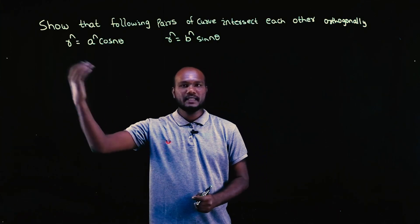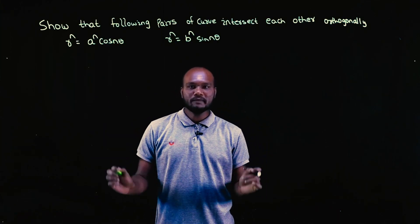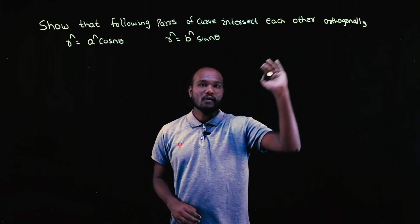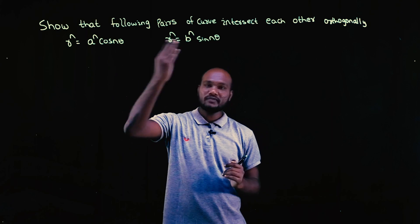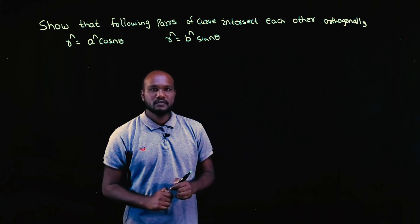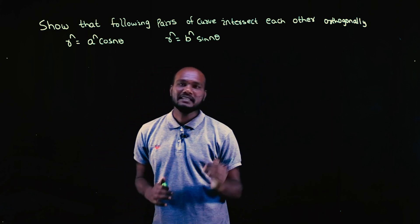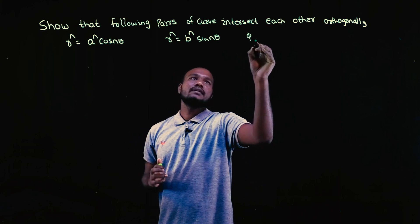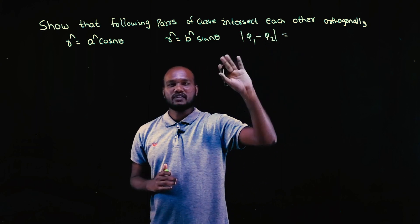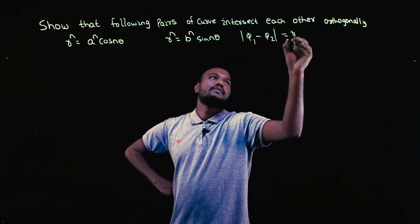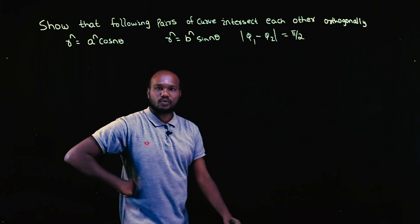What is the question asked? We have to find angle between two curves and they should be orthogonal to each other. There are two pairs of curves, and we have to find angle between them. That means we have to find phi 1 and phi 2, and if we take phi 1 minus phi 2, we should get phi by 2. That's what the question is.